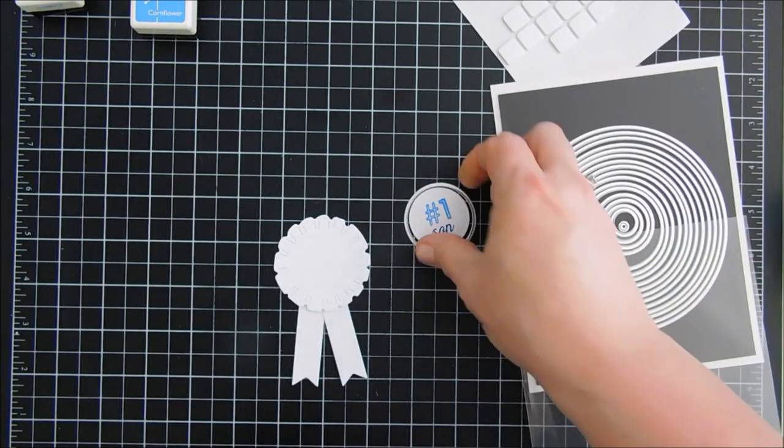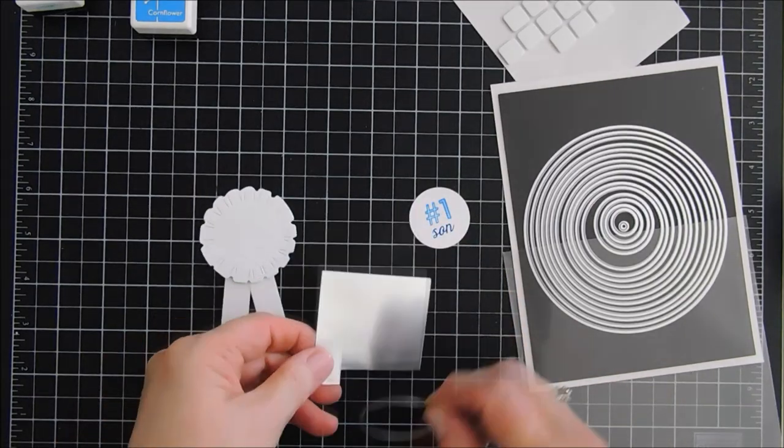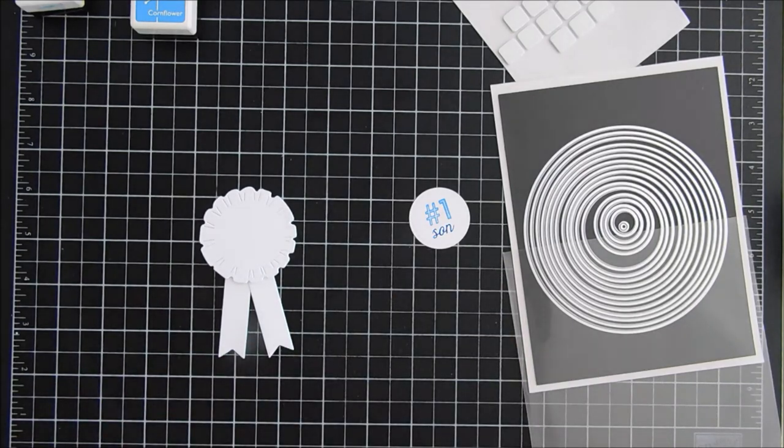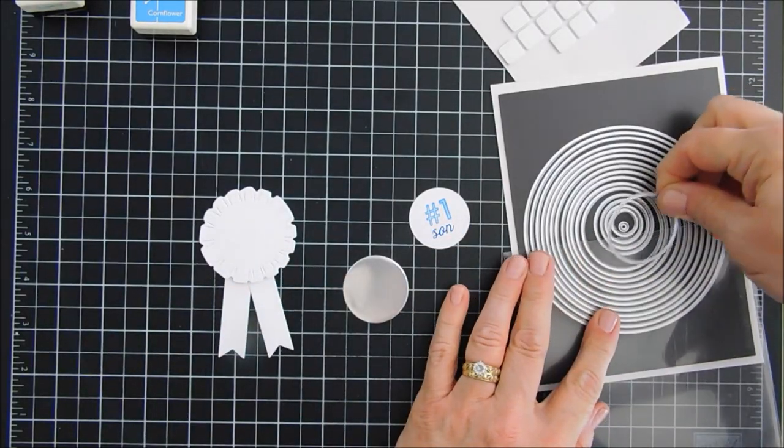Then we'll take some silver mirror cardstock. The one I'm using is from Spellbinders, and it's really nice. When you die cut it out, I'm going to run this through the die cutting machine and we're going to mat our Number One Son on our silver mirror cardstock.